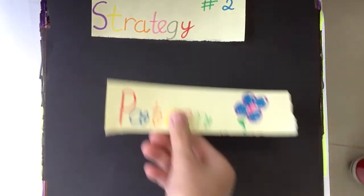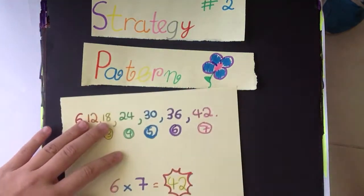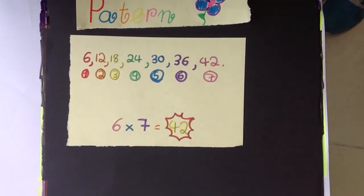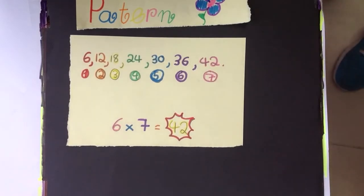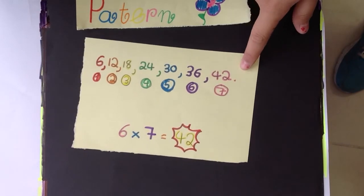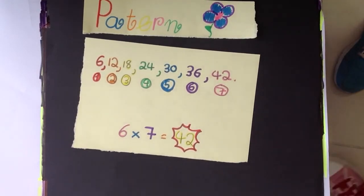Strategy 2. Pattern. This is a strategy that you can use to solve this problem. It's called pattern. For example, 6, 12, 18, 24, 30, 36, and 42. There are 7 groups.